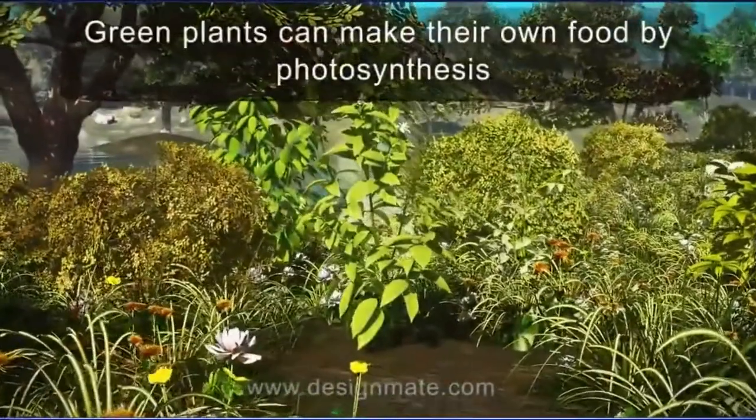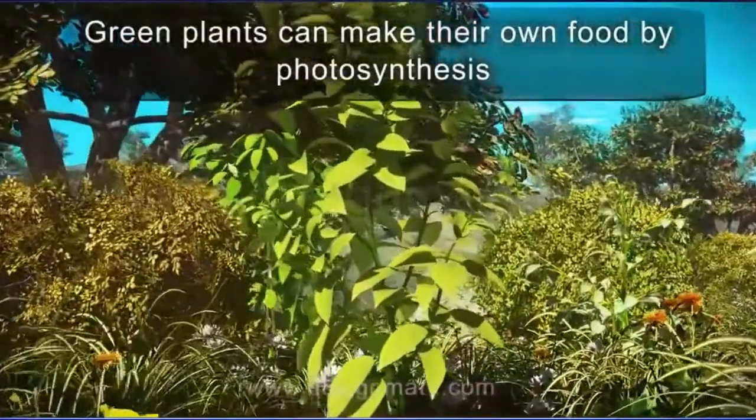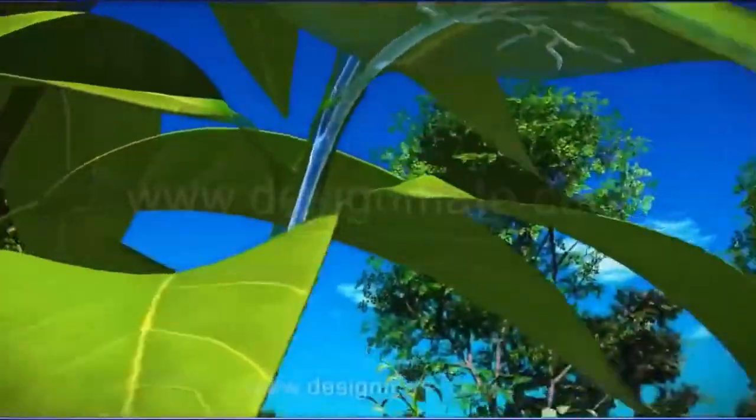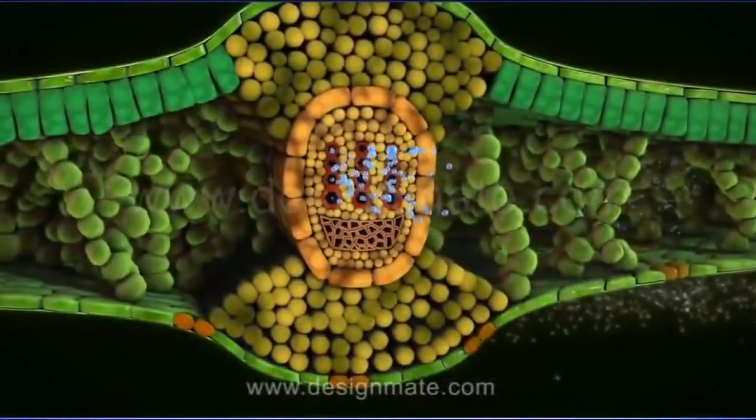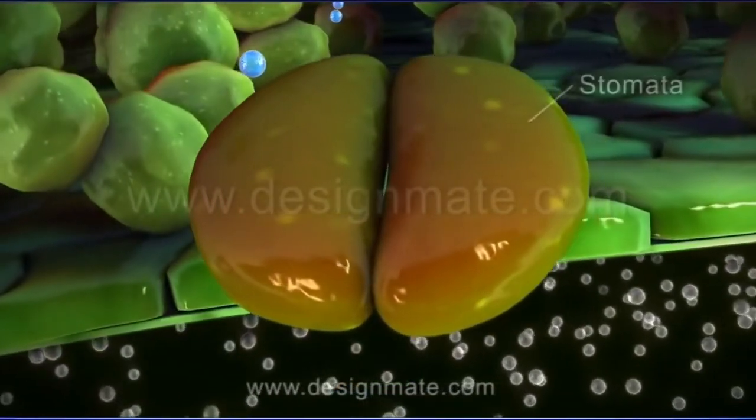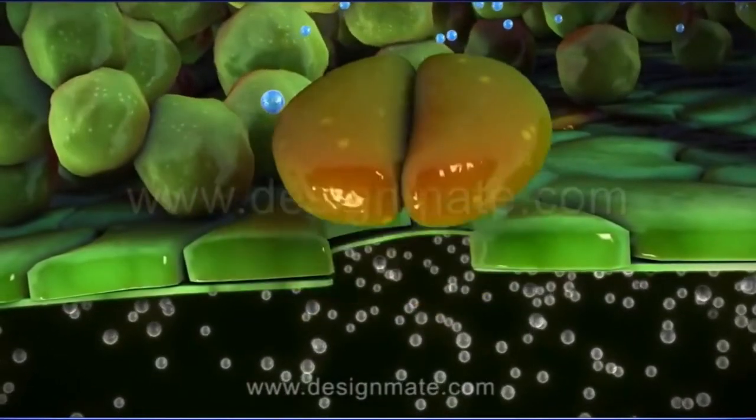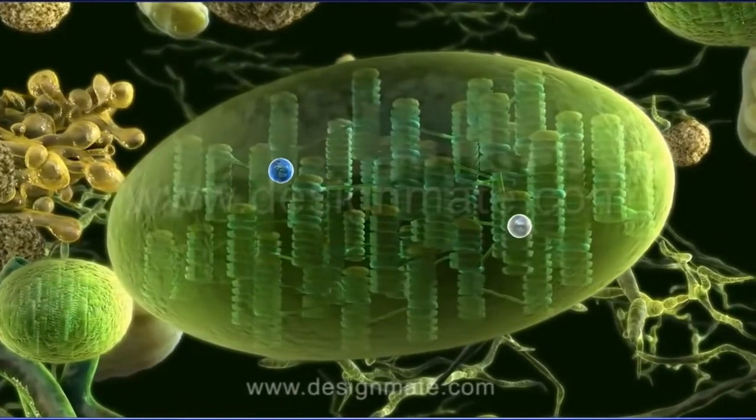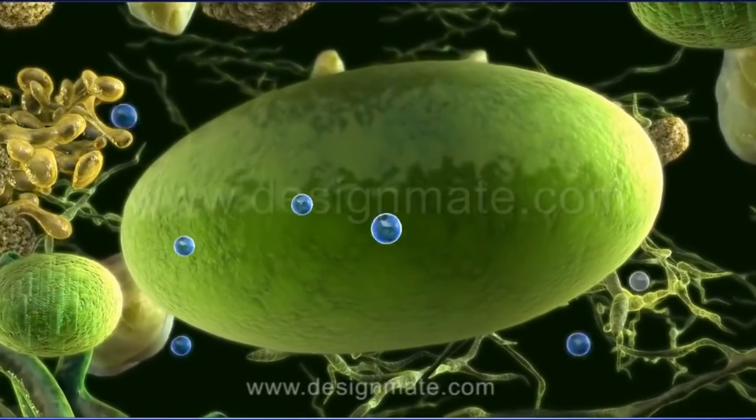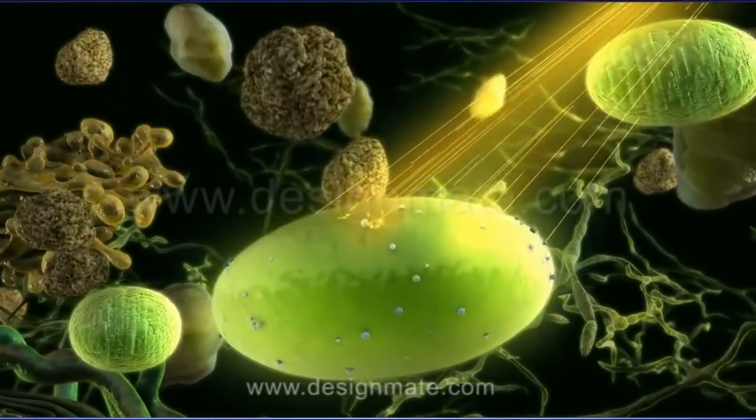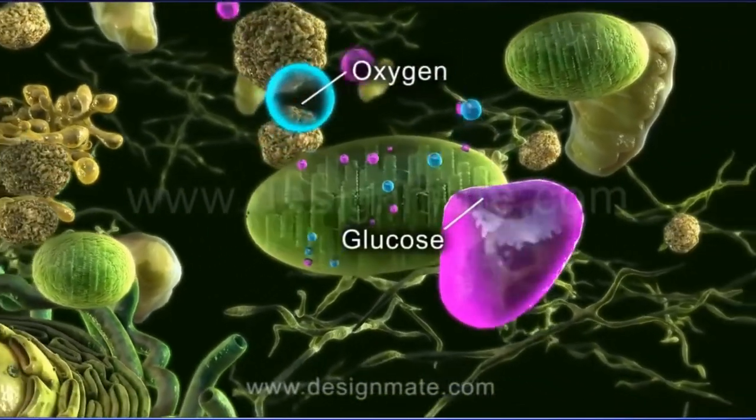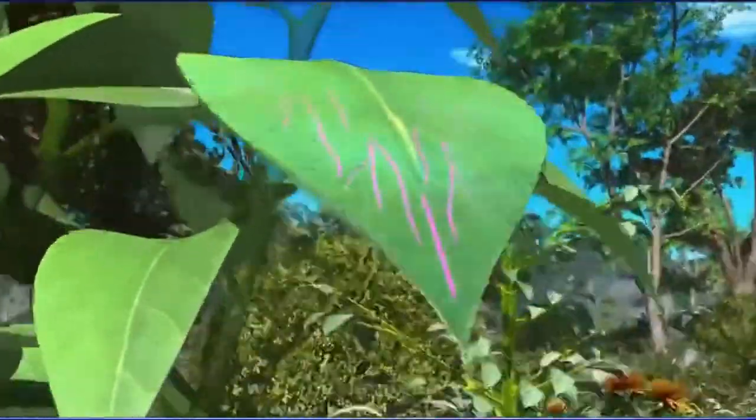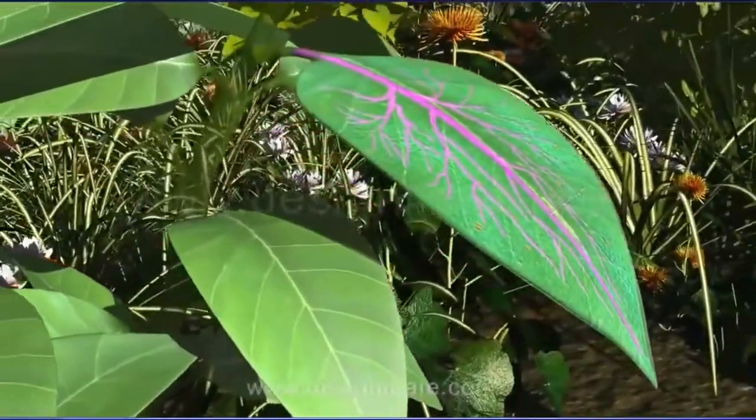To summarize, green plants can make their own food by the process of photosynthesis. Roots absorb water and send it to the leaves. A leaf absorbs carbon dioxide through stomata. Both water and carbon dioxide are absorbed by the chloroplasts, where in the presence of chlorophyll and sunlight, they synthesize glucose and release oxygen. The glucose is transported to all parts of the plant.